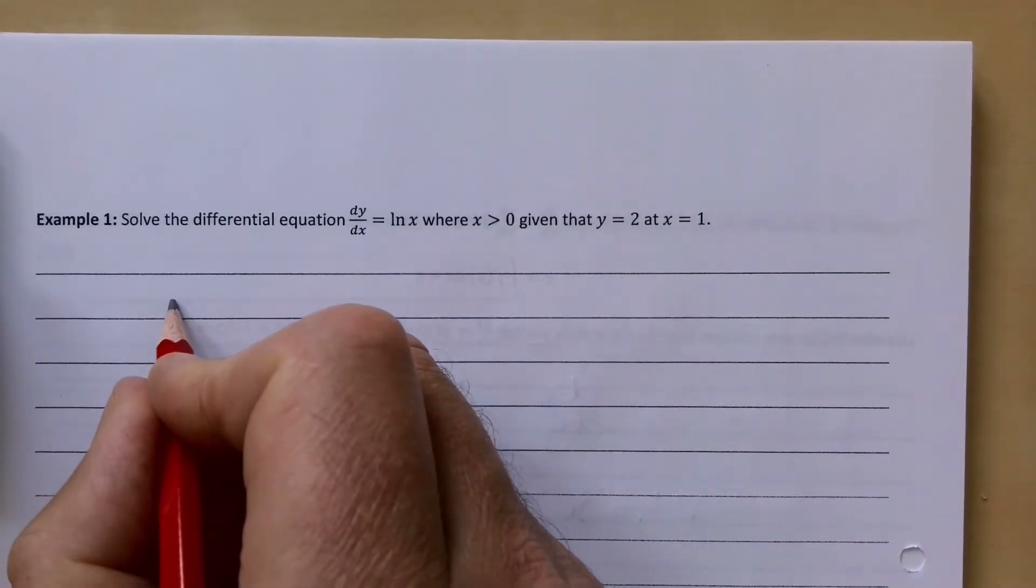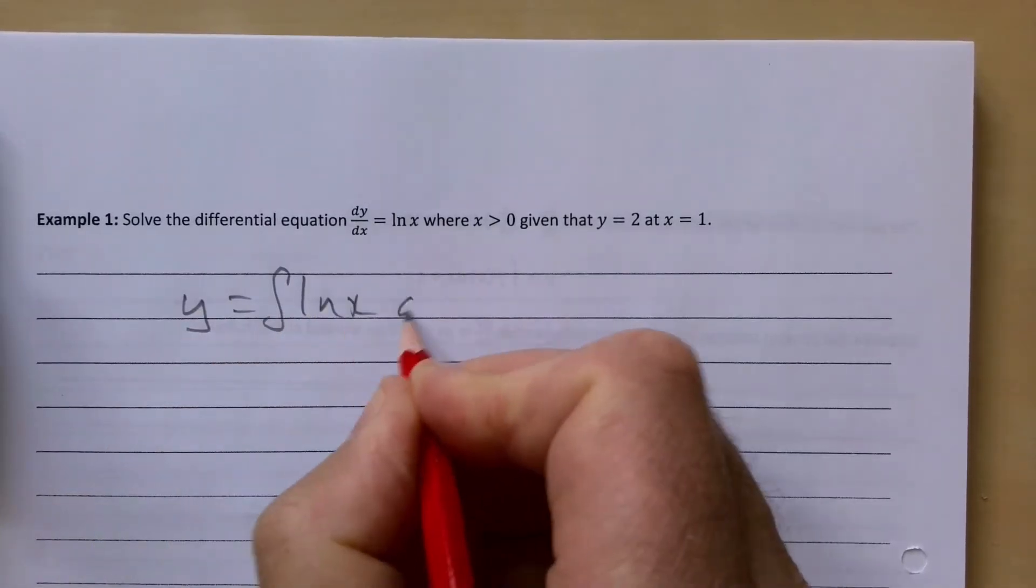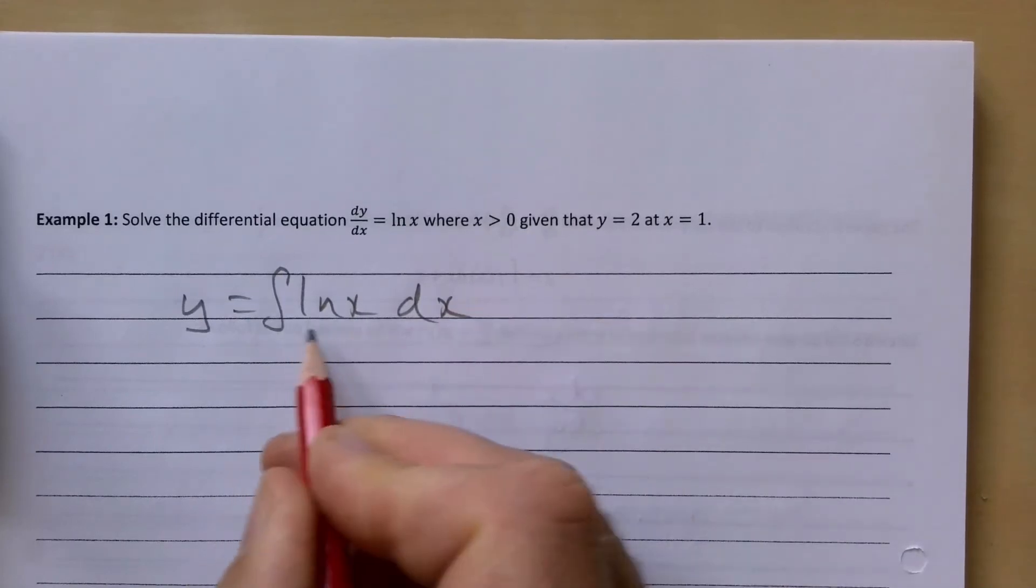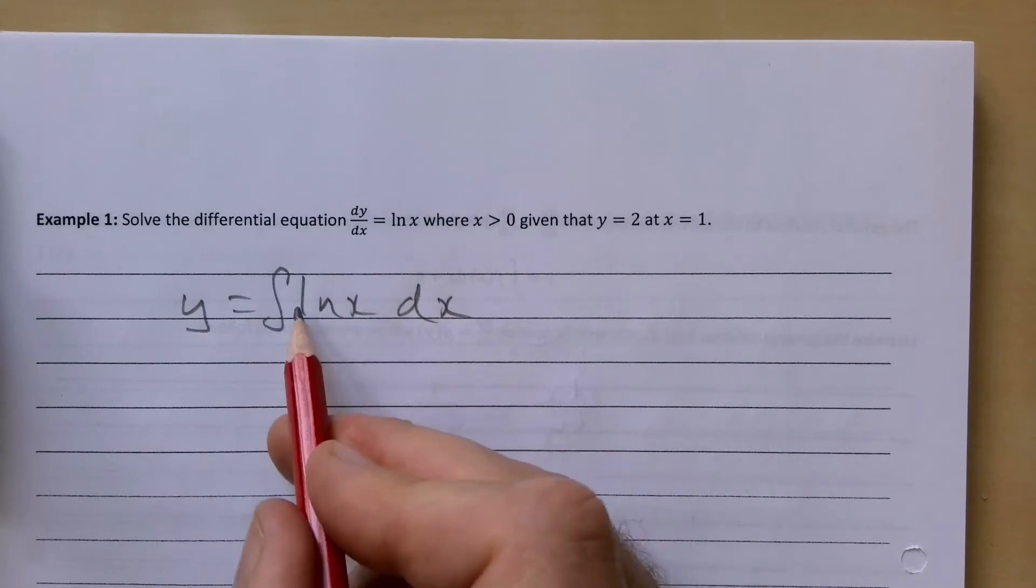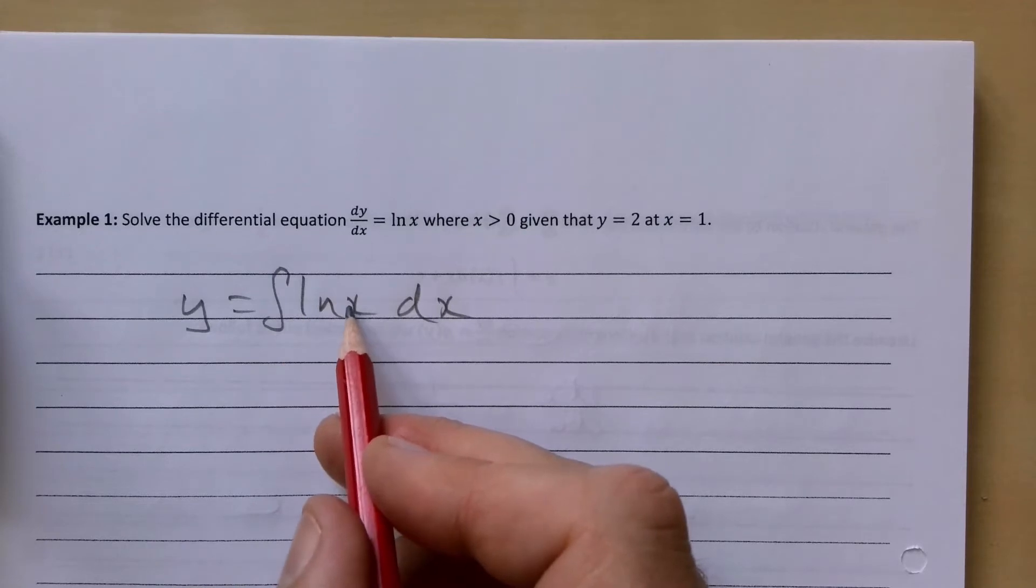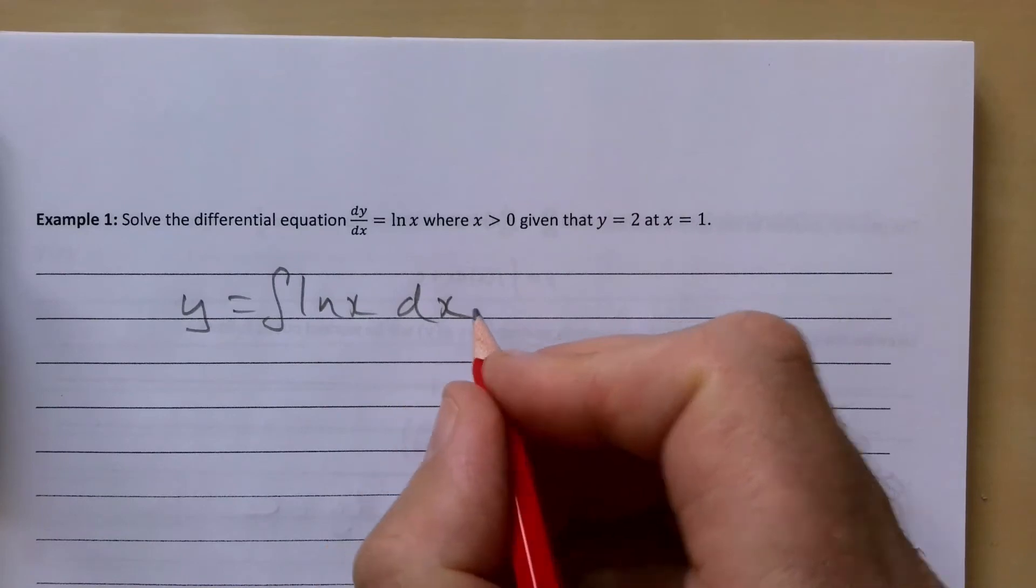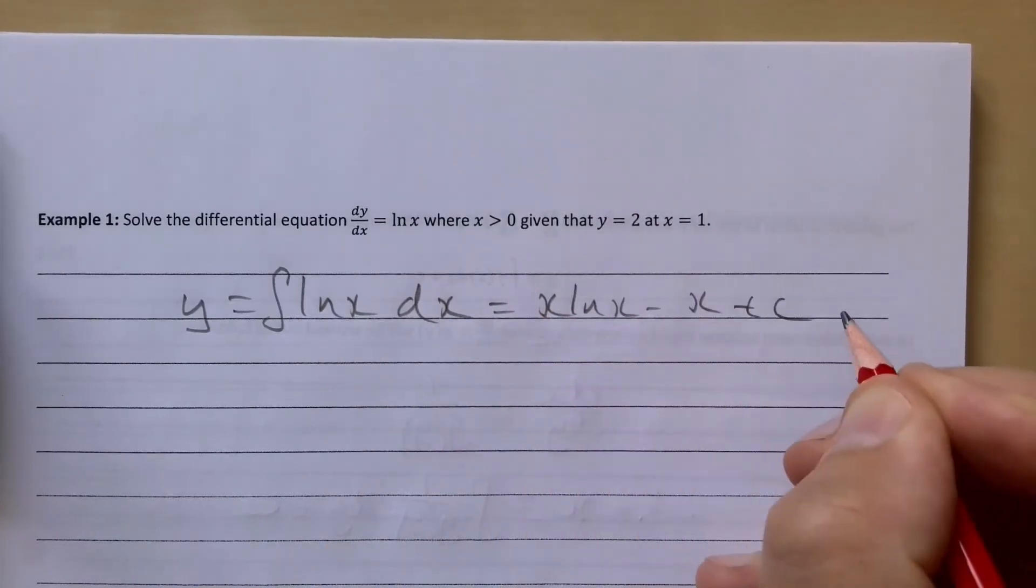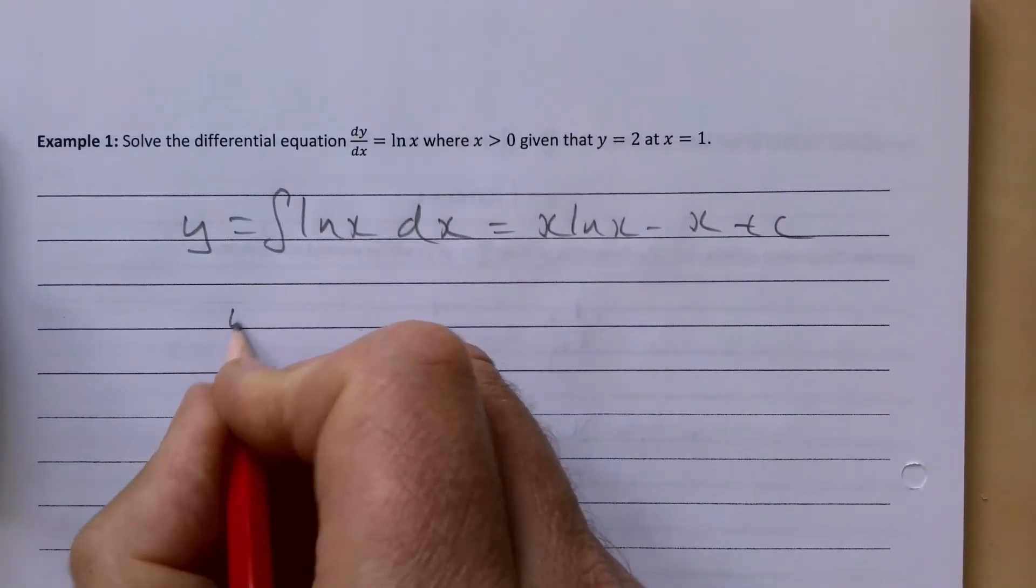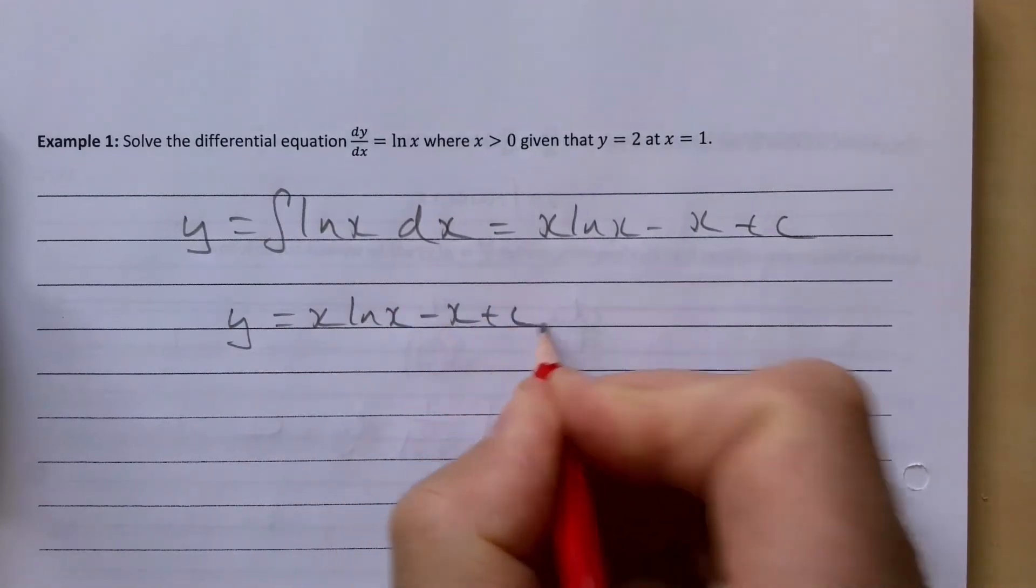We're going to have y = ∫ln(x)dx. I'm not going through this integration by parts one right now. You may remember from a few videos ago we let ln(x)dx = u and multiply by 1. But if you integrate this, you get x·ln(x) - x + c.